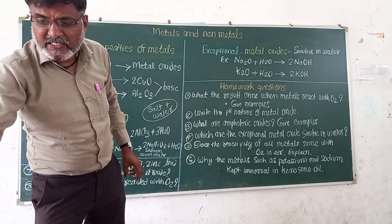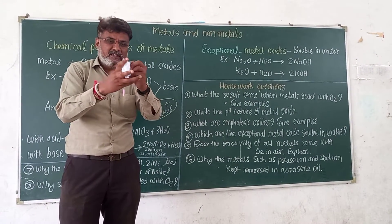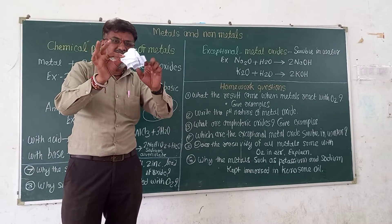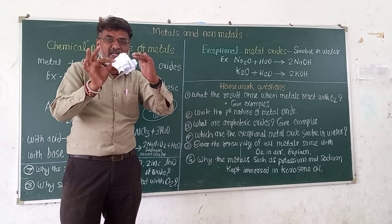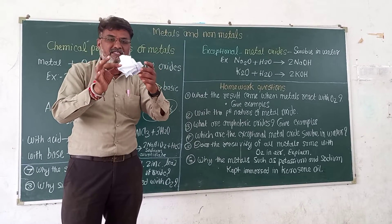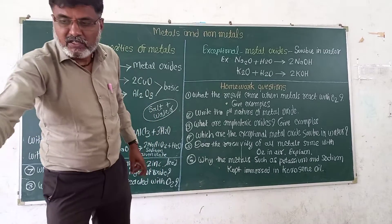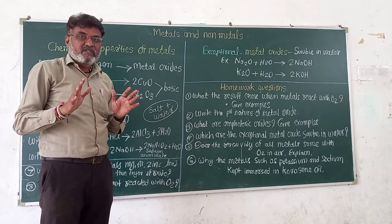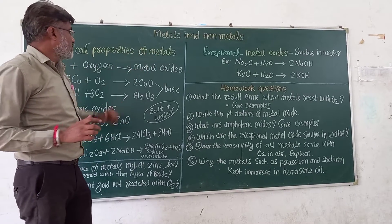Physical change, on the other hand, is just like this paper — I have written on it. What is this change? It is a physical change. There is no colour change or appearance change. This is just physical change. So all of you now understand chemical change. Now let us look at the chemical properties of metals.